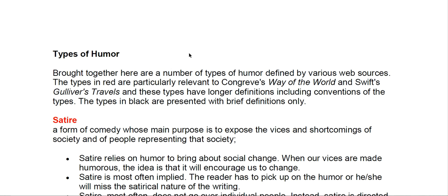Hey everyone. I want to spend a couple minutes walking through this assignment with you since it's the final one and you can't revise it. I want to make sure that you are all on the same page. You have in this module read two works: Congreve's Way of the World and Swift's Gulliver's Travels. Both of these are considered humorous writings, so what we're going to do is look at both works and identify what kind of humor we see in them.